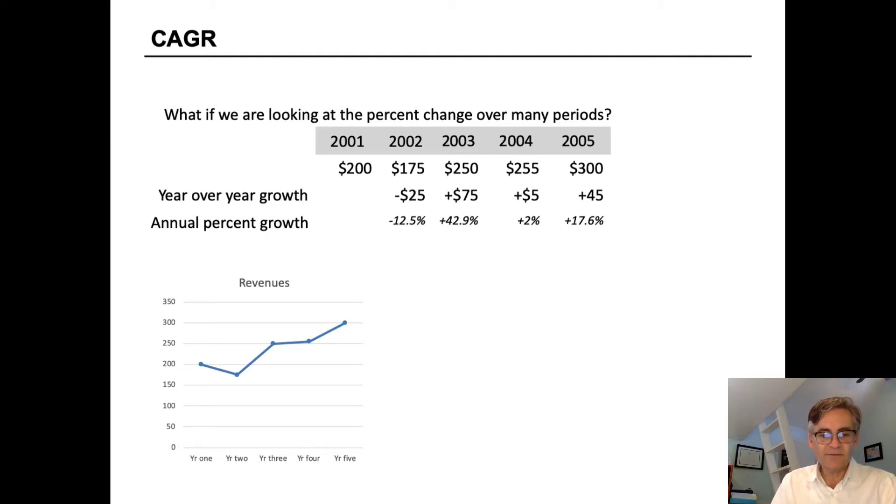When we look graphically, this is what's happened to the revenues. You can see the dip in year 2 and then the kind of flattish from year 3 to year 4. And what we're trying to do with a compound annual growth rate is say, if this company had produced steady growth from period 1 through period 5, what would that growth rate have been?